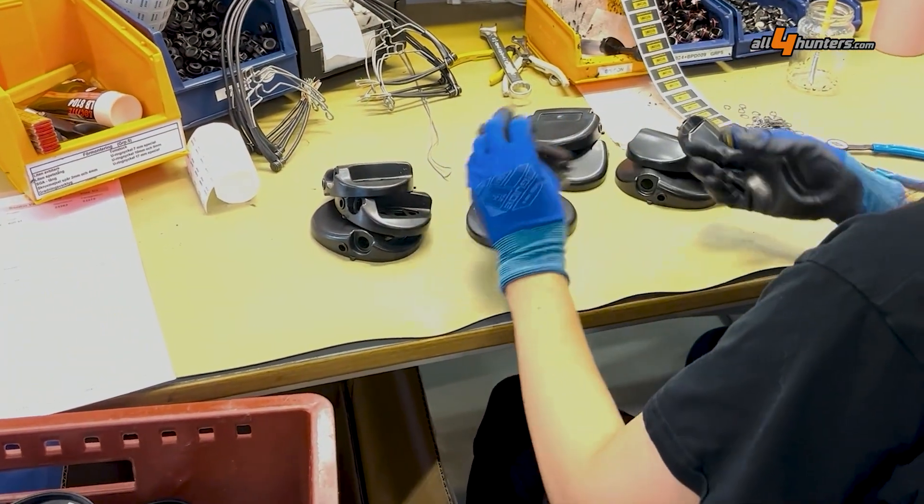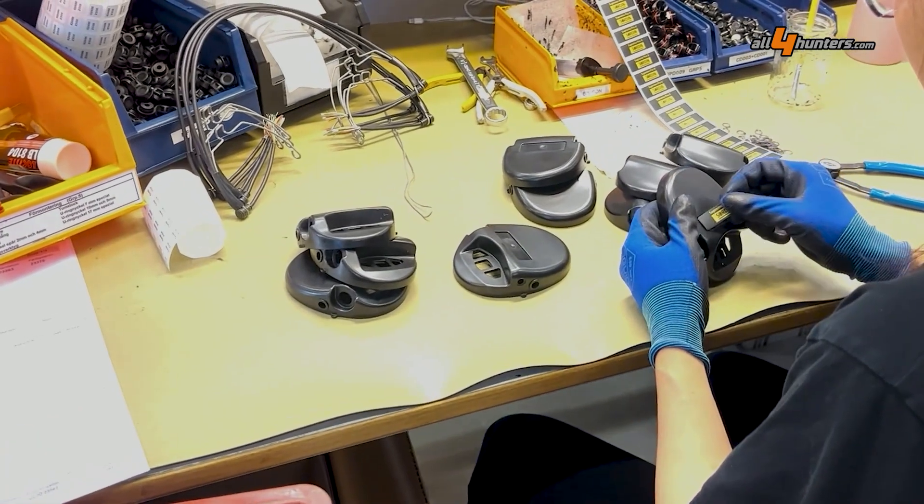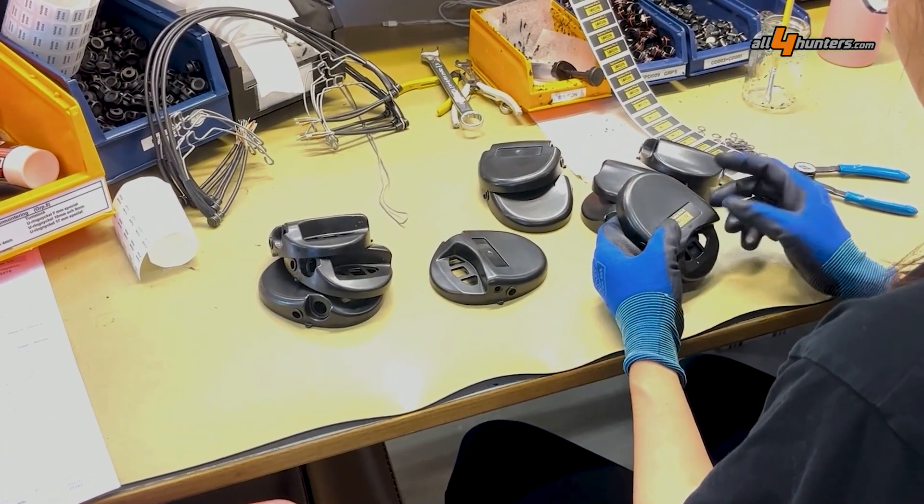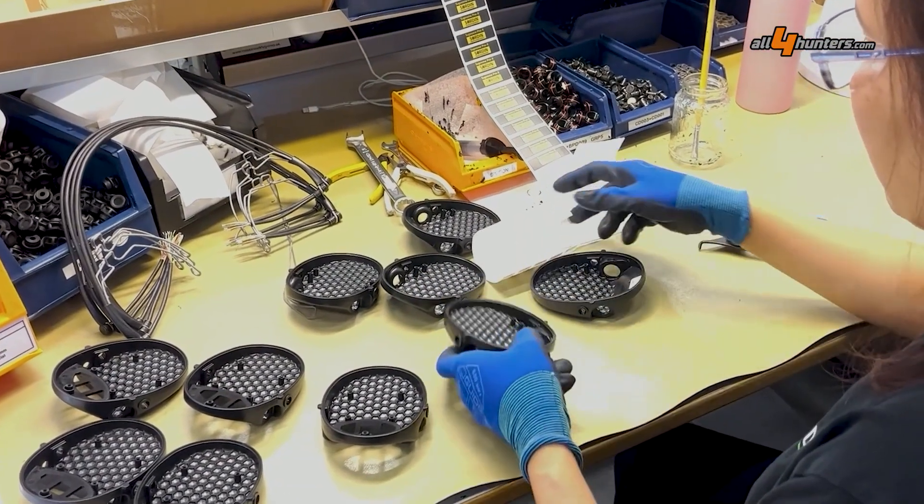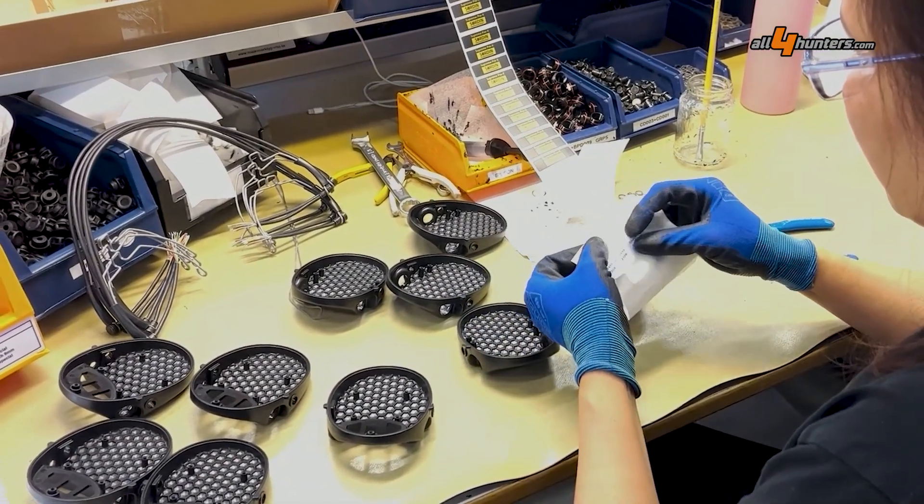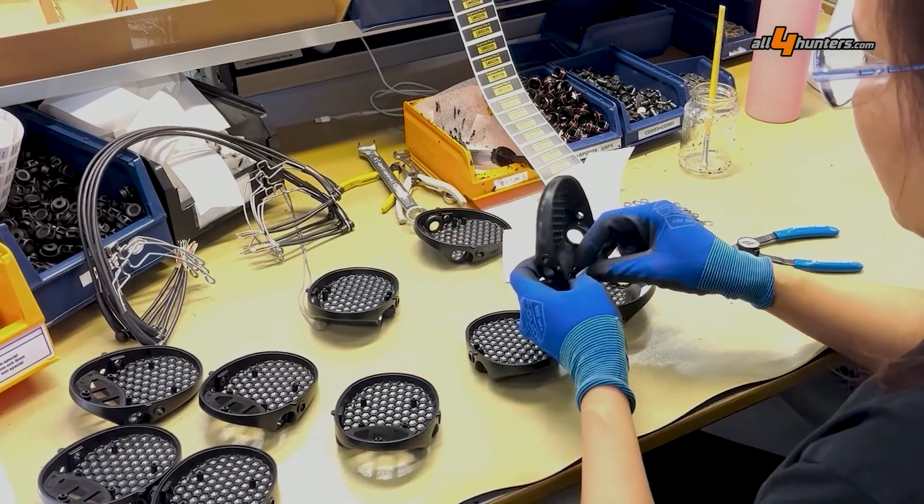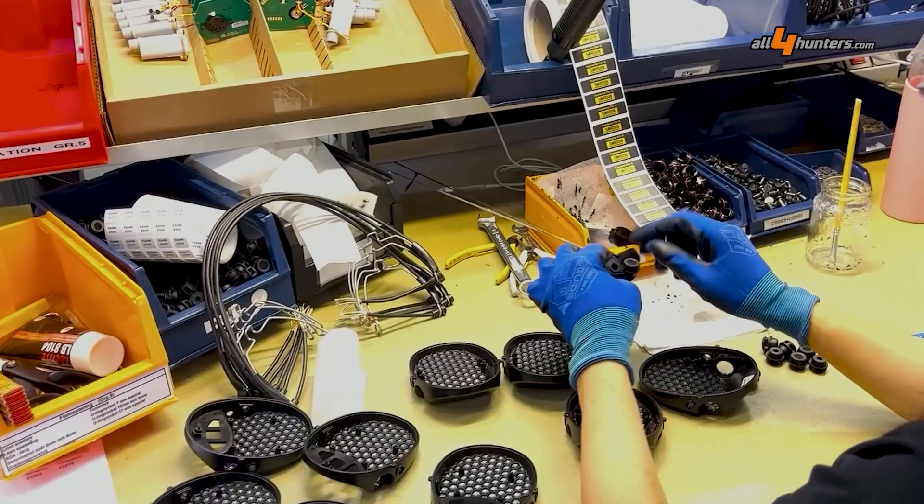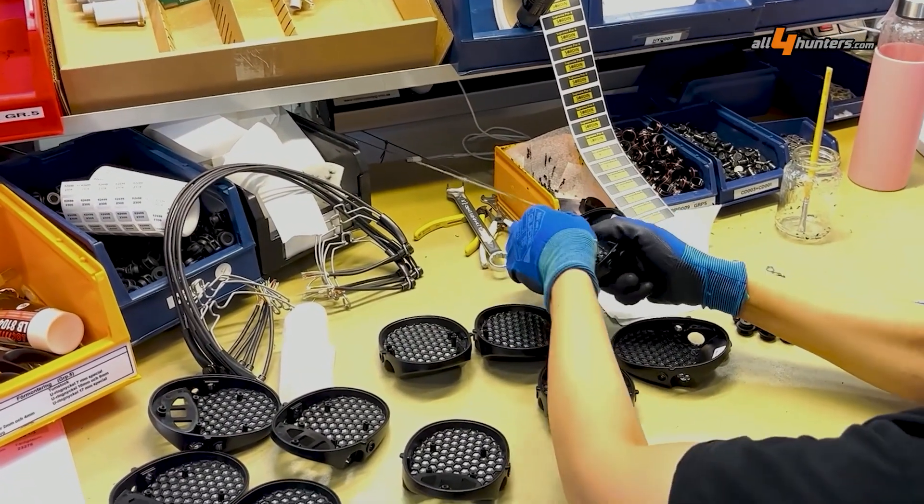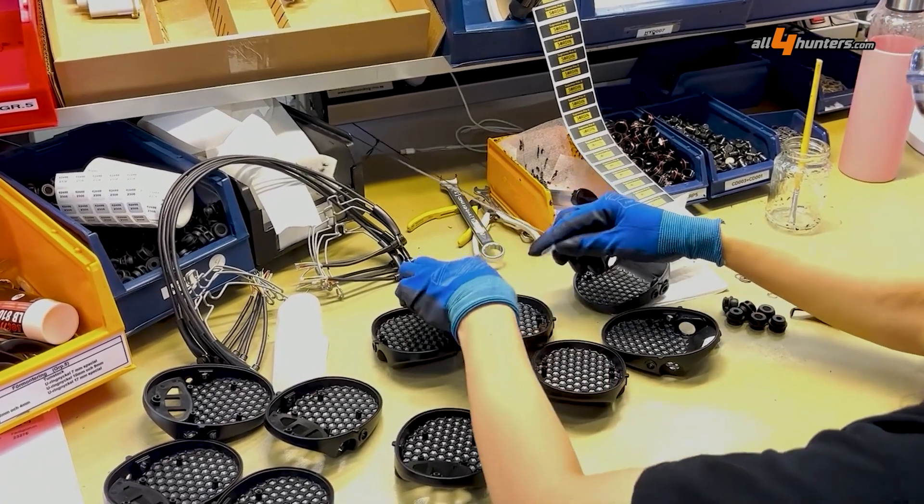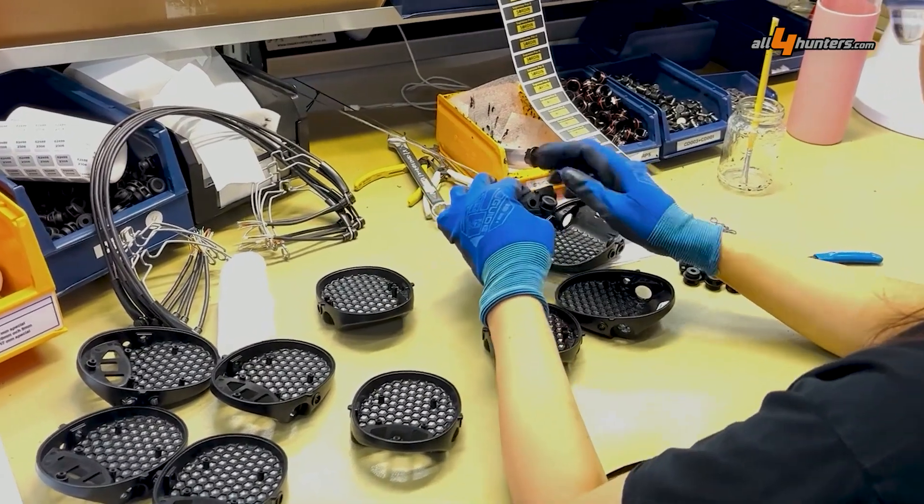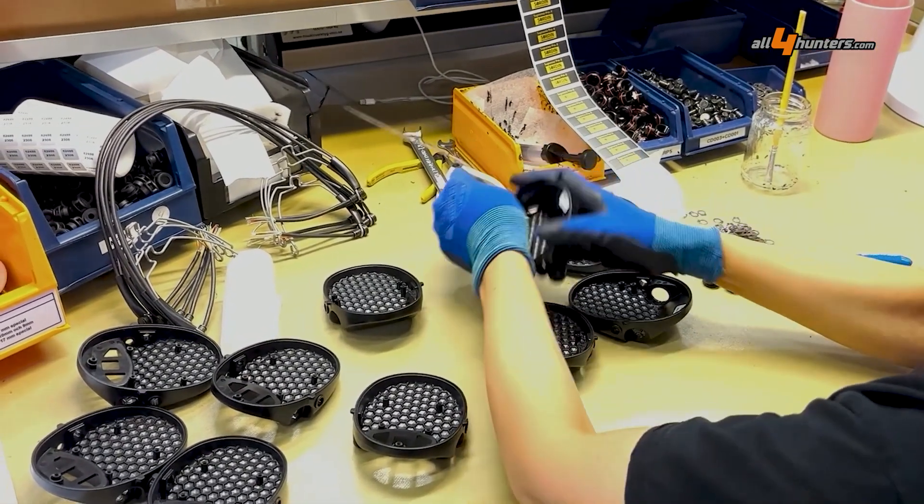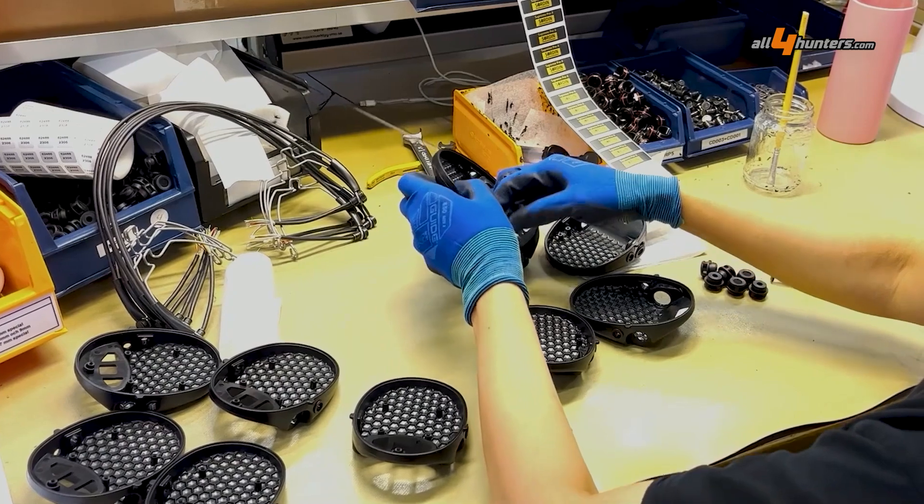At the factory, the whole process begins with an employee applying all the necessary stickers to the cups. Once this is done, the rubber seals for the microphones are inserted into the cups. That's where the microphones of the hearing protection go in later, so that the cups are waterproof at that point.